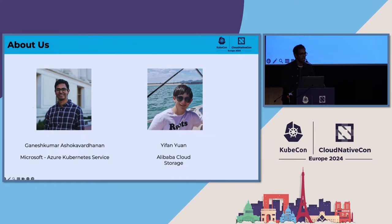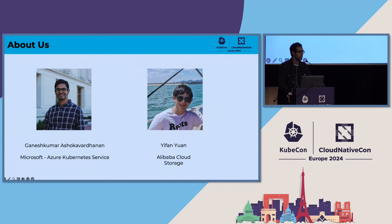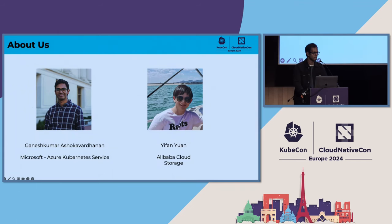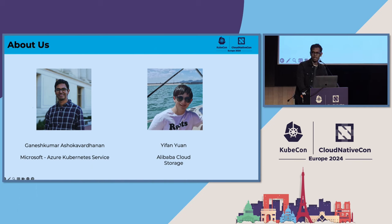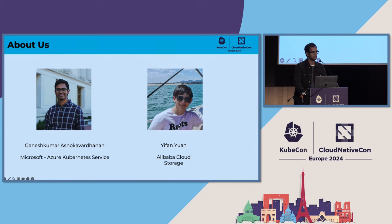I'm Ganesh Kumar Ashoka Varanin, a software engineer at Microsoft on the Azure Kubernetes Service team. I work on node lifecycle and GPU workloads. I also develop a feature called artifact streaming, which speeds up pod start times on AKS, in close collaboration with the Azure Container Registry team. With me today is Yifan Yuan from Alibaba Cloud Storage team, and he's a major maintainer of the OverlayBD open source project, which we use for AKS and many other companies use as well.